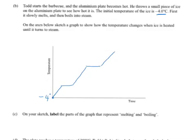And then once again, once that's completed, it's going to increase in temperature again. And part C says, on your sketch, label the parts of the graph that represent melting and boiling. So this part here is melting, and the other part over here is boiling.